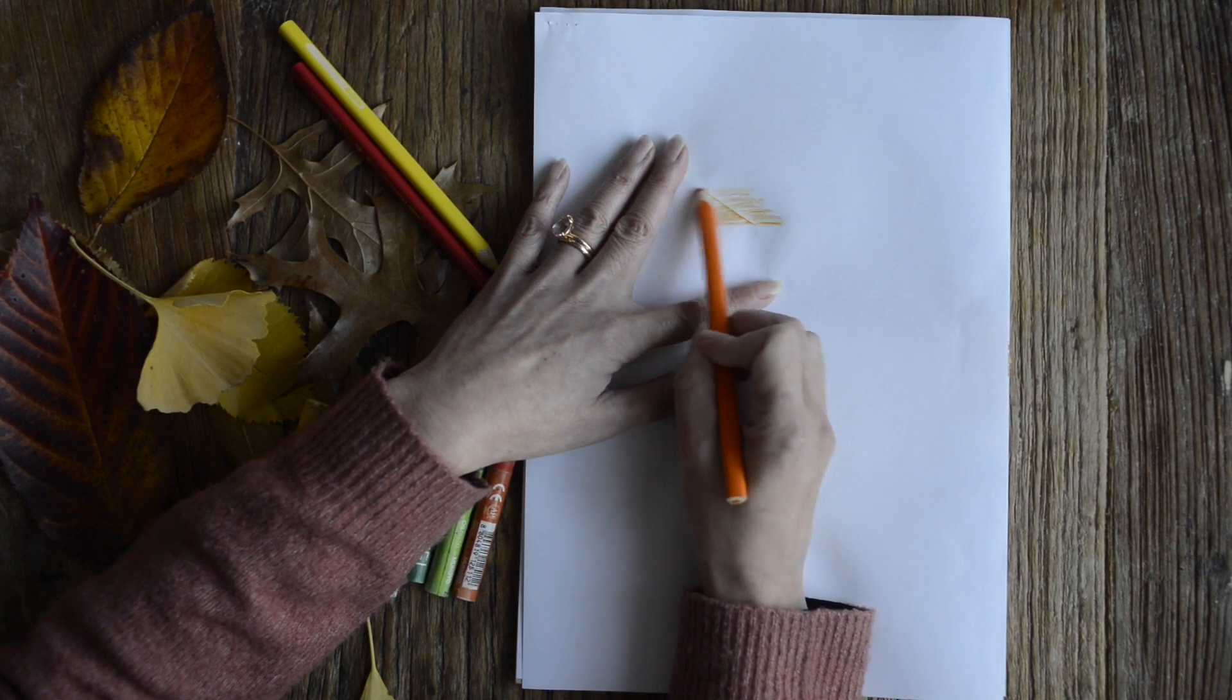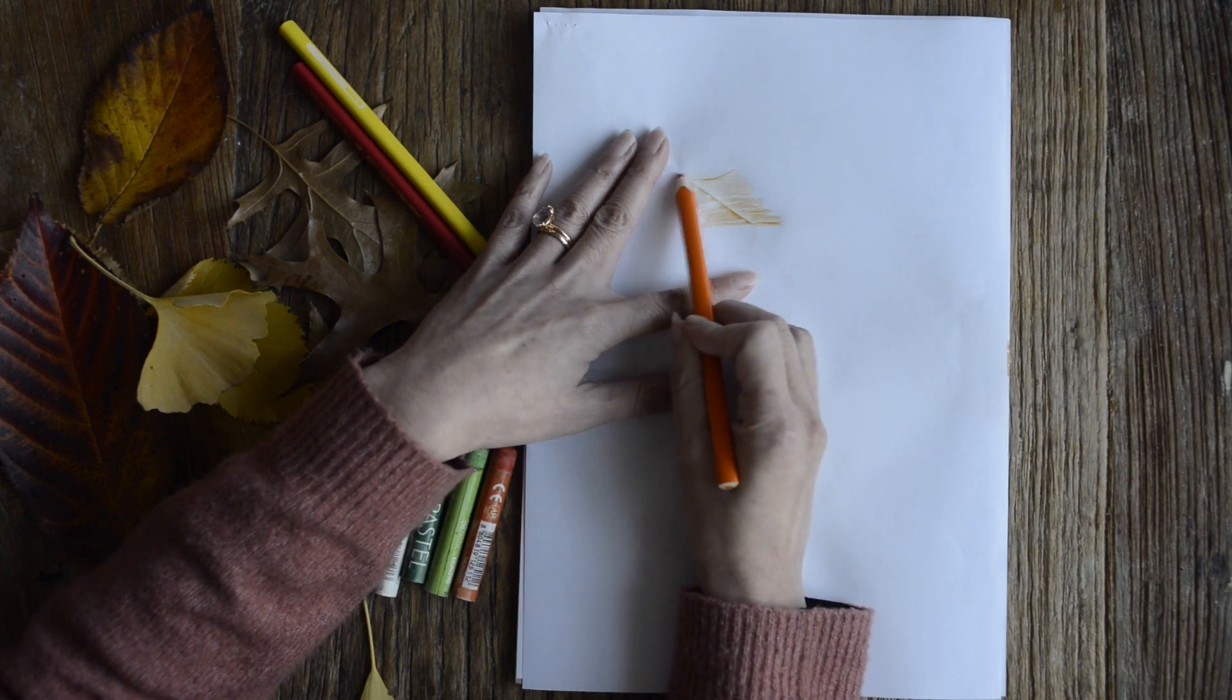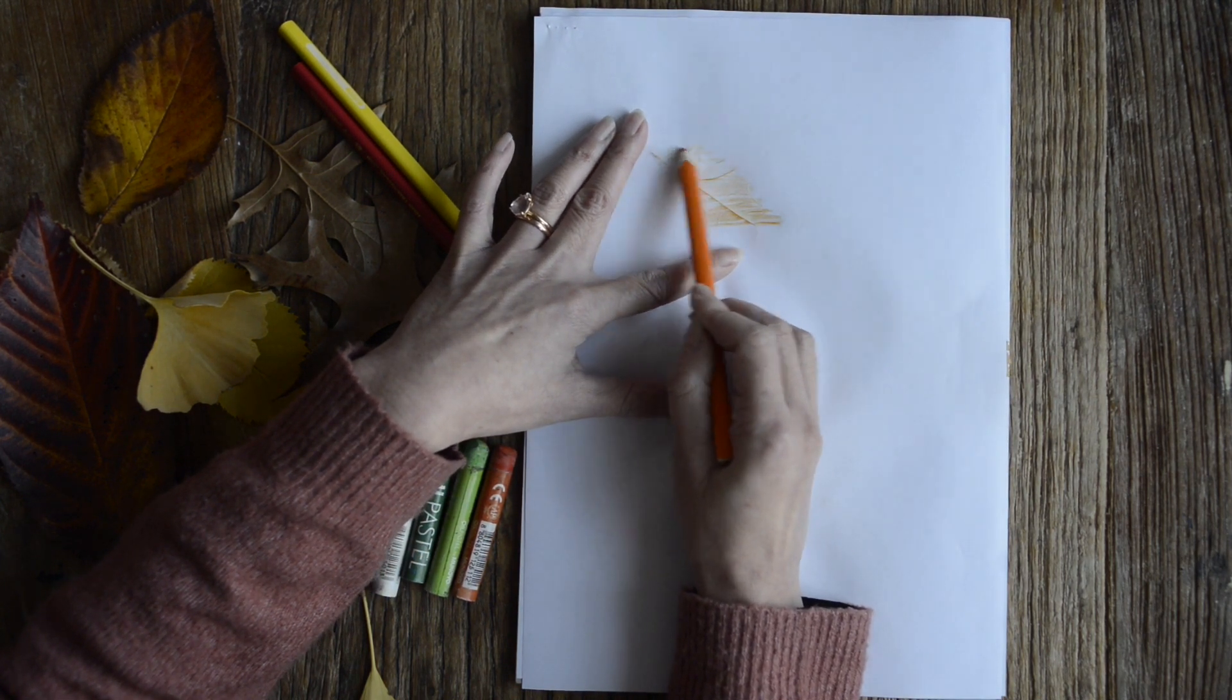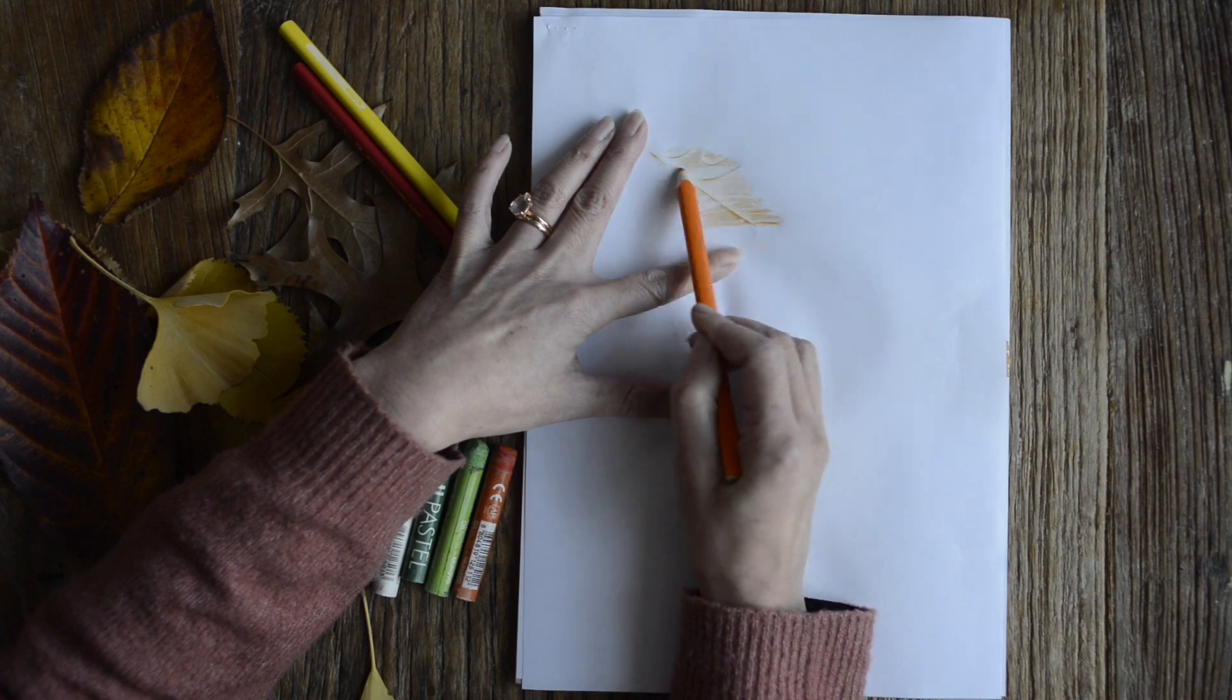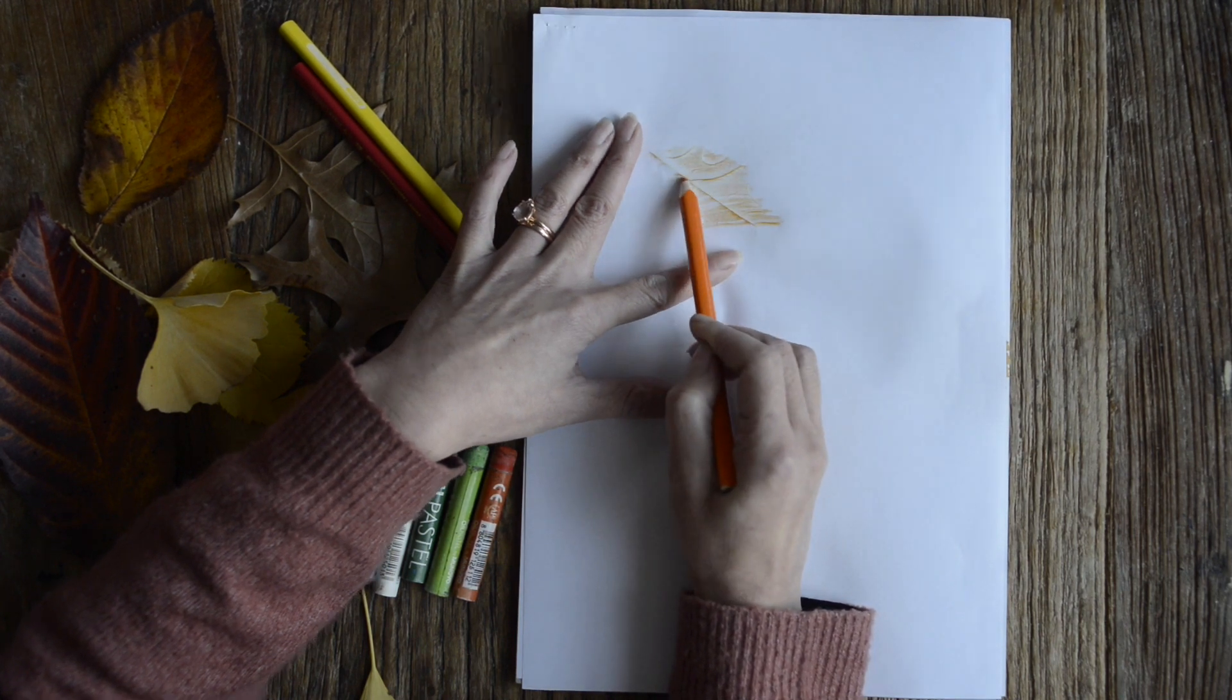And so the stem or the shape of your leaf and the lines of your leaves, or the veins of your leaves, should show through. So you just rub your pencil over and over. It's kind of like coloring in.